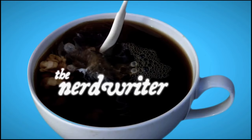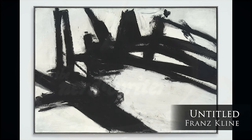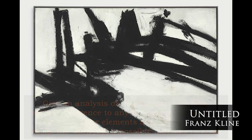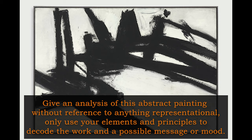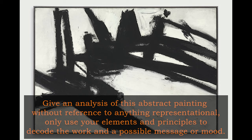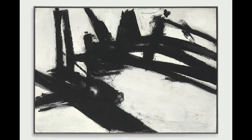Click on the link to watch the Nerdwriter's video about how abstraction came to be. You're going to hear some of the same things we've already discussed in this lesson, but you'll also gain some new perspectives on the history of abstraction in art. When you come back, we will end with this practice analysis. Give an analysis of this abstract painting by Franz Kline without reference to anything representational — use only your elements and principles as your guide, and discuss how he uses the most basic qualities of the elements and principles of art to convey a mood, feeling, message, or emotion in the piece.